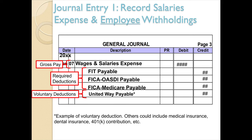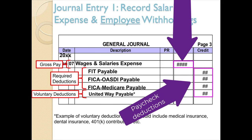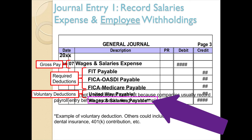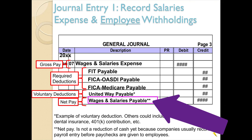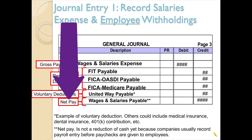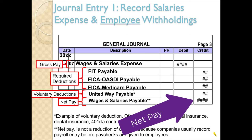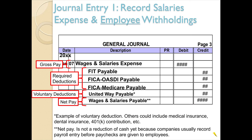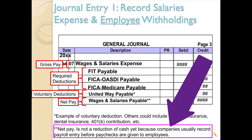At this point, should gross pay equal all the deductions? No — because if that were the case, employees would have no take-home pay. The remaining payable is called wages and salaries payable, wages payable, or salaries payable, and this represents net pay. Net pay plus all the deductions must equal gross pay. The reason wages and salaries payable is used instead of cash is that companies usually record the payroll entry before paychecks are actually given to employees.